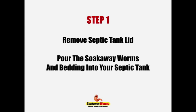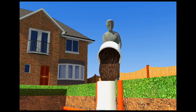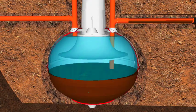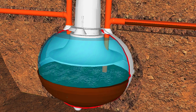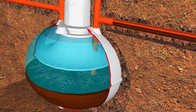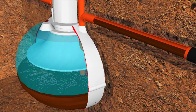Step one: remove the lid from the septic tank and pour the worms and the bedding all into the tank, then replace the lid. The worms will fall to the bottom of the tank and very quickly adjust to their surroundings. They'll start burrowing into the sludge and making their way up through the outlet pipe towards the pipes that lead to the soak away.